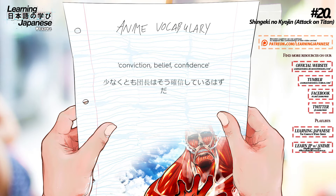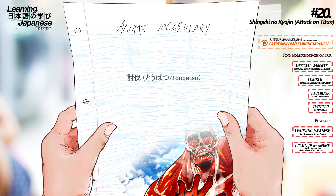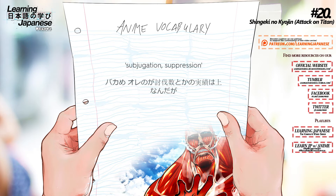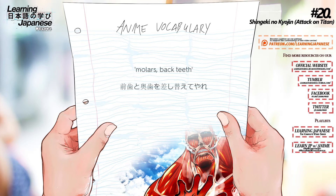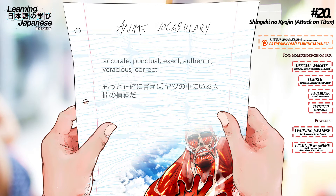Conviction, belief, confidence. 討伐 (toubatsu) — Subjugation, suppression. 奥歯 (okuba) — Molars, back teeth. 性格 (seikaku) — Accurate, punctual, exact, authentic. Correct. 答えさ (kotaesa).